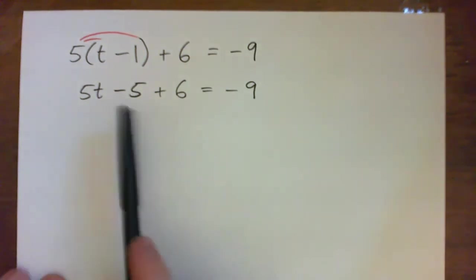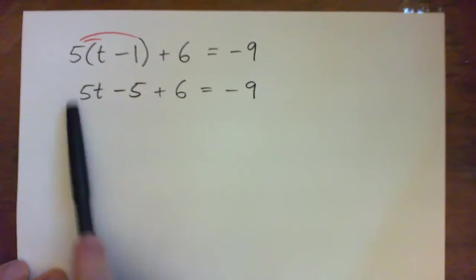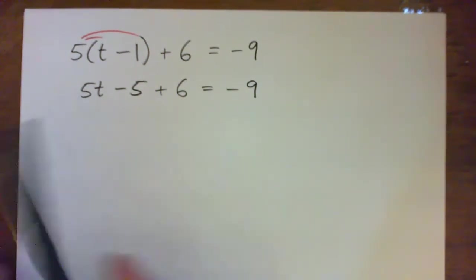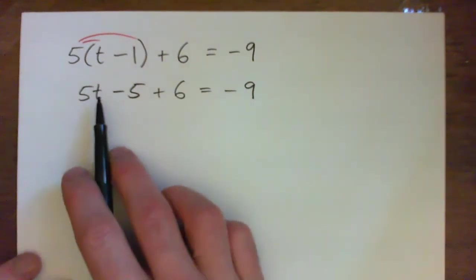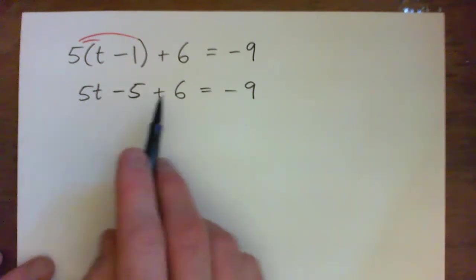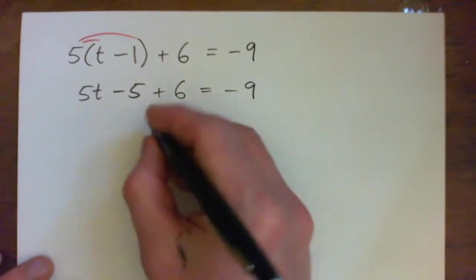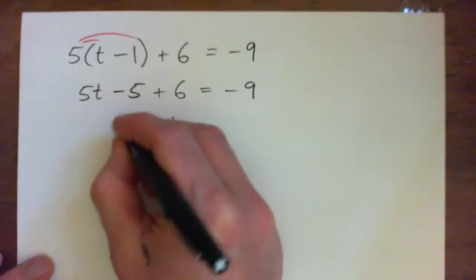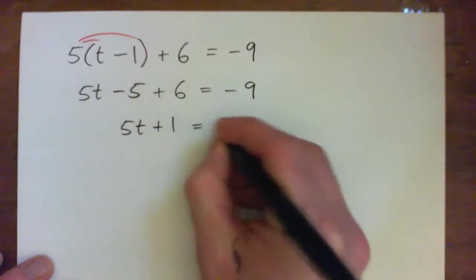You can add like terms. You've got a number and a number. We can't add the t term to anything because it's not a number. It's 5t like 5 turnips or something. We don't know what t is. But we can add negative 5 and 6 together to get a positive 1. So we have 5t plus 1 equals negative 9.